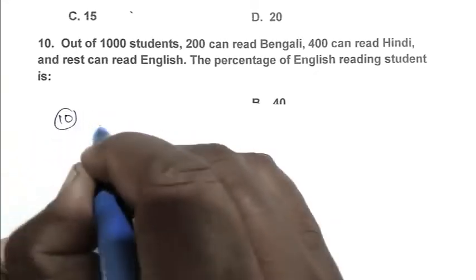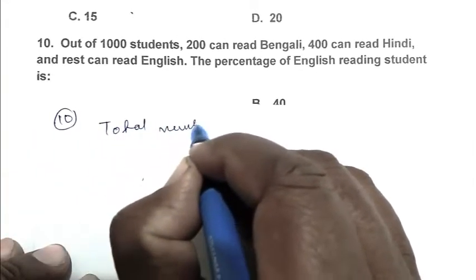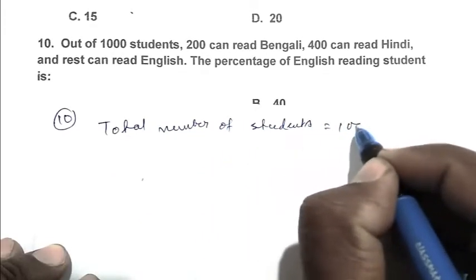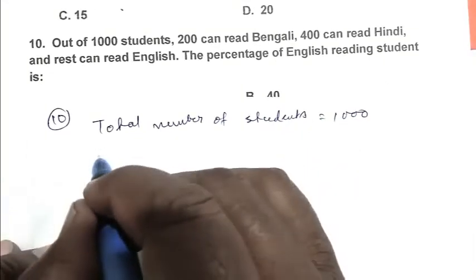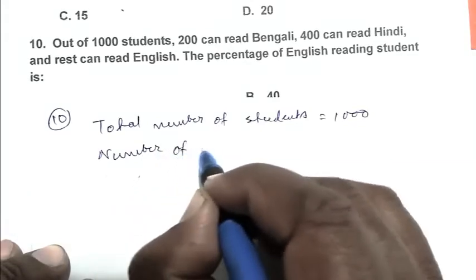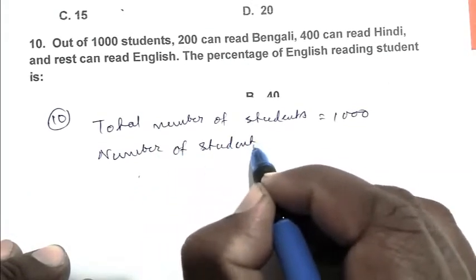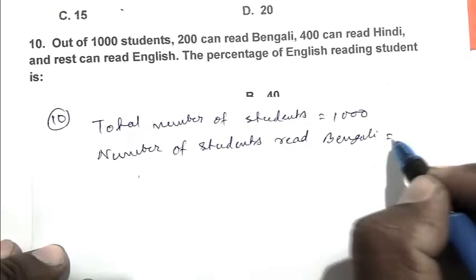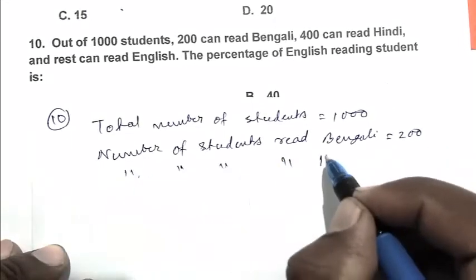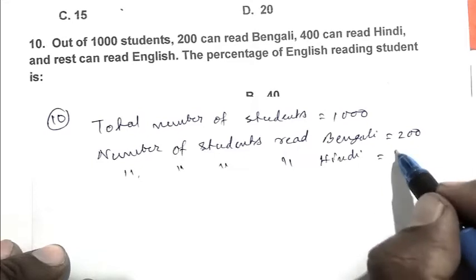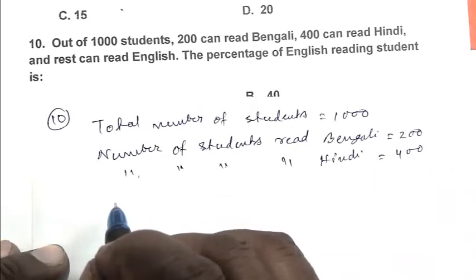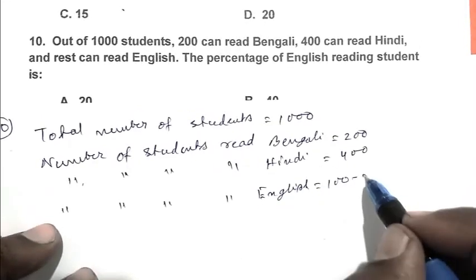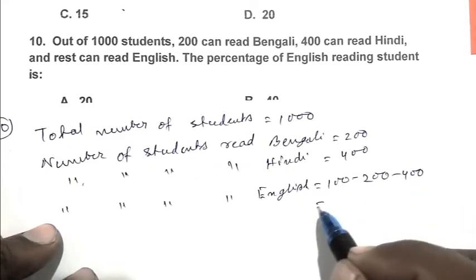Total number of students is 1000. Number of students who read Bengali is 200, number of students who read Hindi is 400. Number of students who read English: 1000 minus 200 minus 400, that is 400.